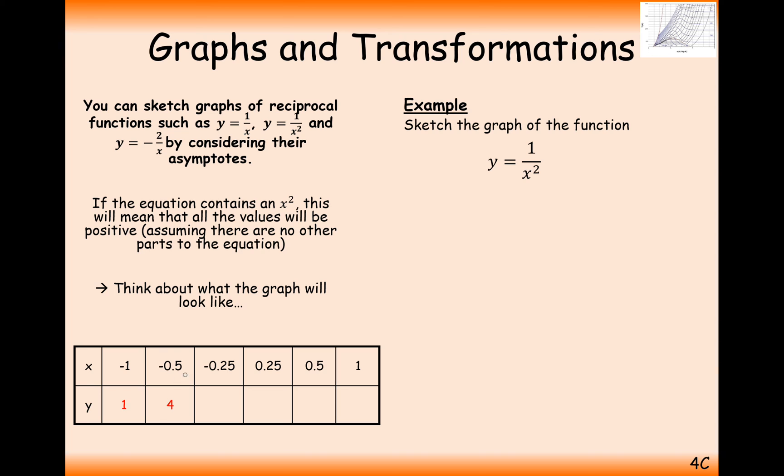Minus 0.5 squared is 0.25, and then 1 over 0.25 is 4, and that's going to be 16, and then it's going to be symmetrical on the other side of the x-axis, on the y-axis.